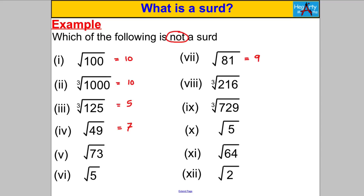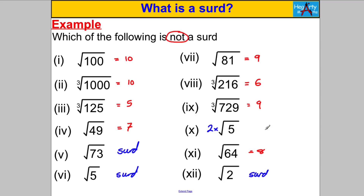Root 5 is also a surd, as we've already discussed. The square root of 81 is not a surd — it equals 9. The cube root of 216 is not a surd — it equals 6. The cube root of 729 is not a surd — it equals 9. Root 2 is a surd, and I'd like to point out: if the square root of 2 is a surd, then 2 times the square root of 2 is also a surd, as is 3 times or 4 times. The square root of 64 is 8 — not a surd. But root 2 is a surd, and so is 2 times root 2.